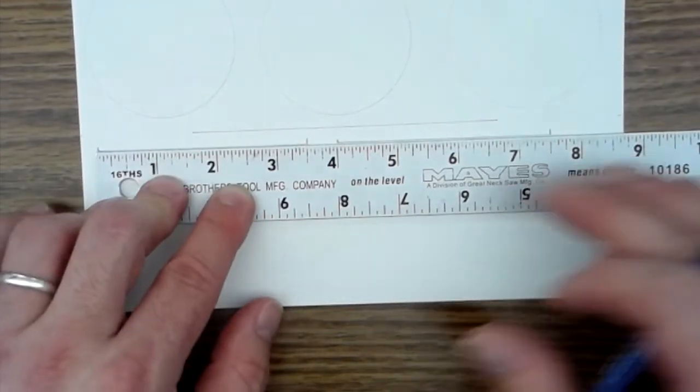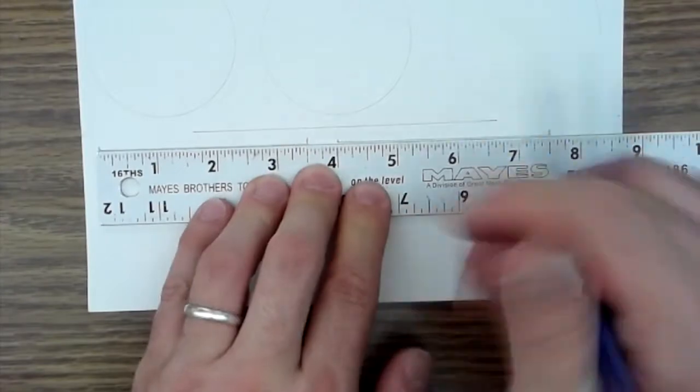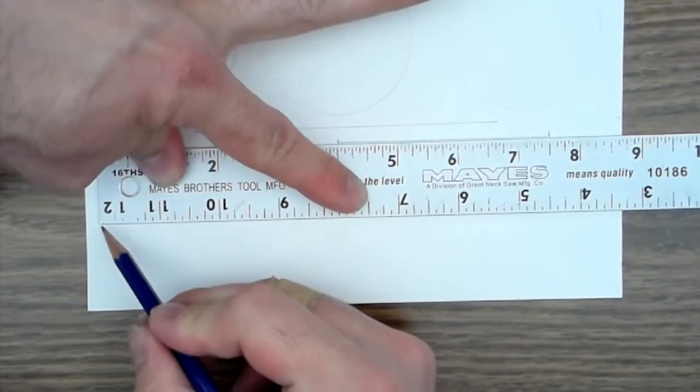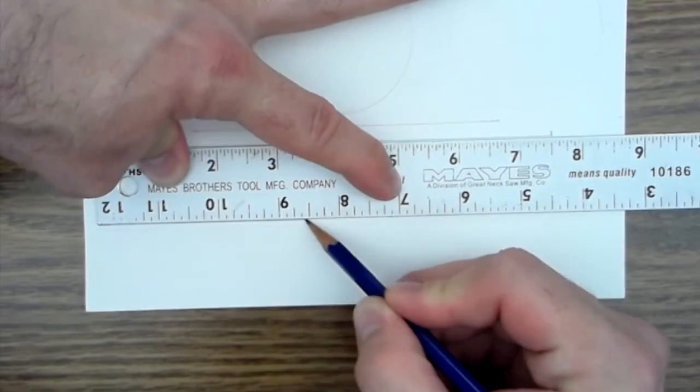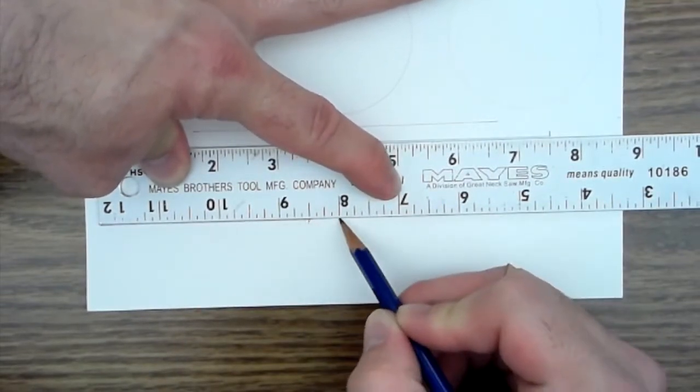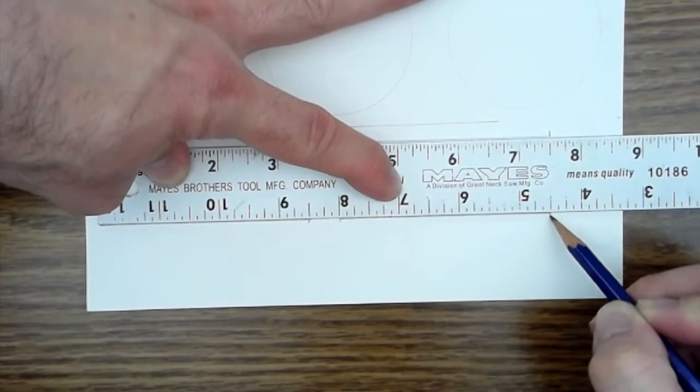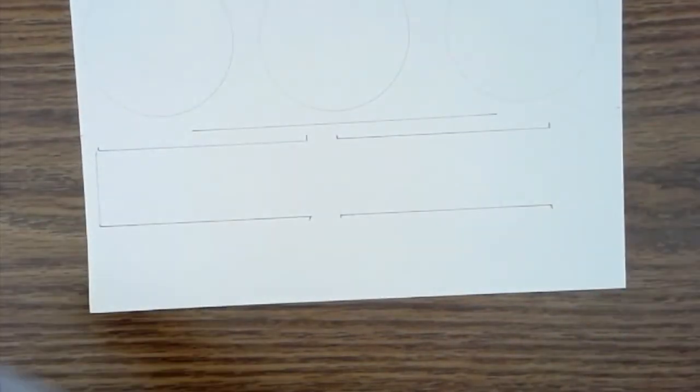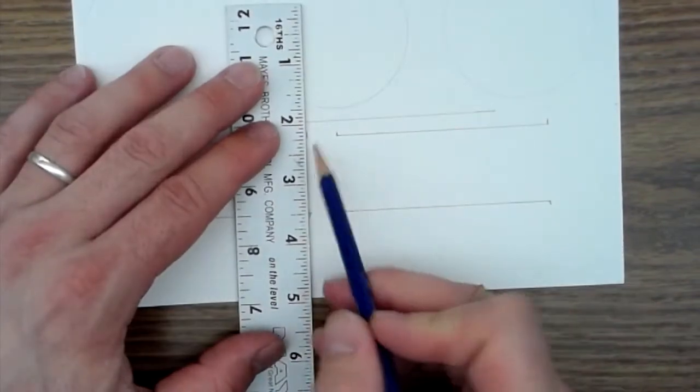Now I'm going to trace the ruler again. So along the outside edge here. Three and a half and stop. Skip. Now I'm going to close off the shape.